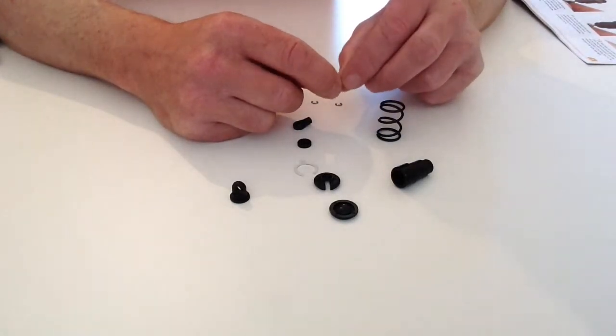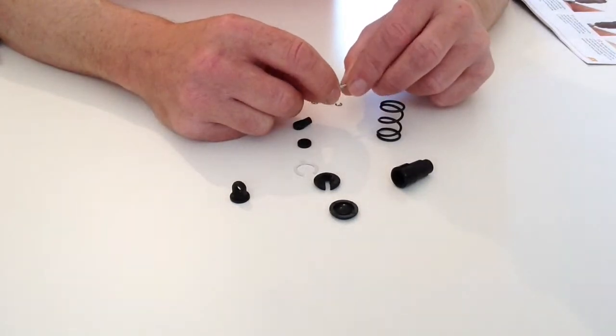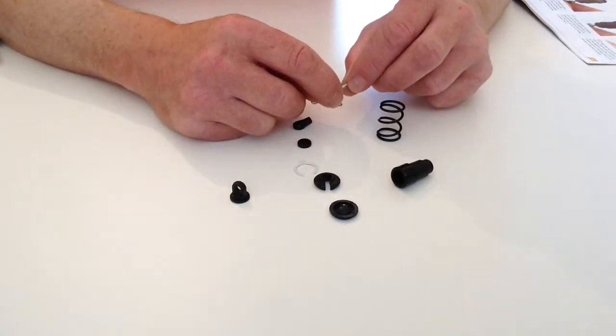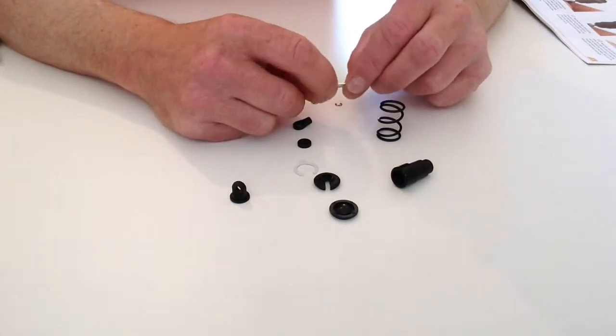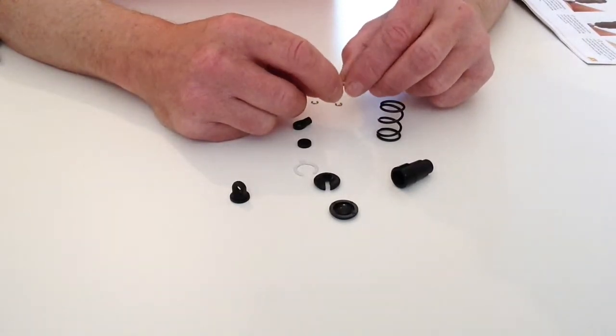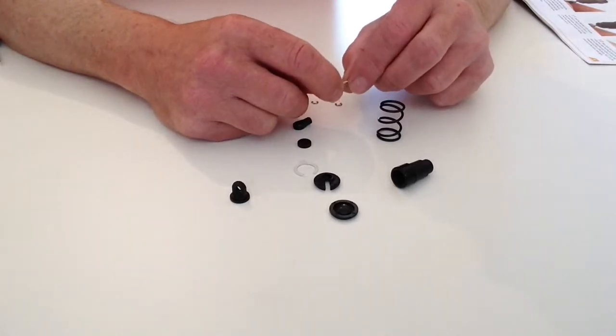Once we've actually put the shock absorber together, we want to make sure that both the shock absorbers are set to the same length. Then later on in the build we're going to be attaching both of the rear shock absorbers together to the rear of the car.